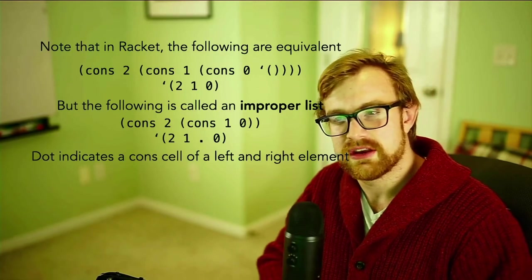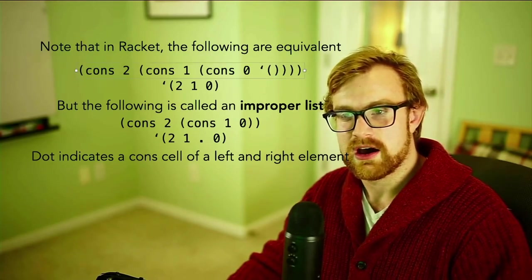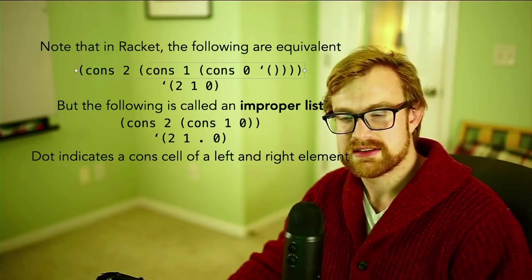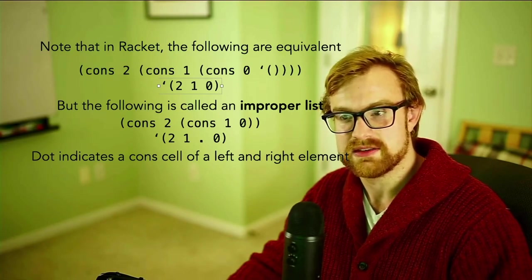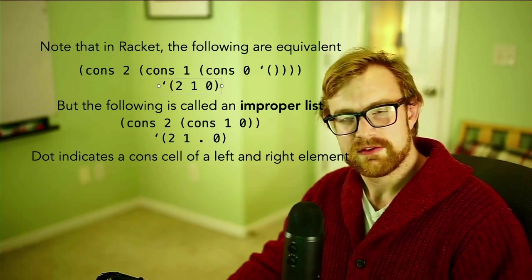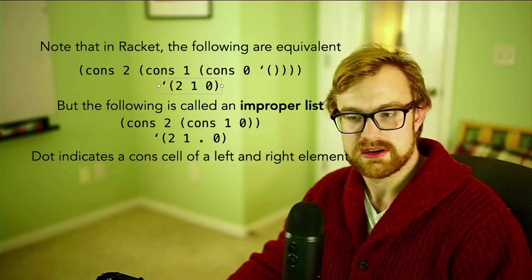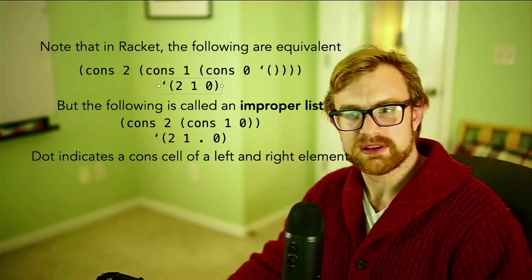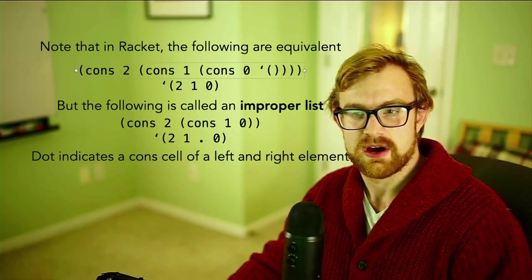And this is how Racket actually represents lists in memory. So each of these different cons cells is laid out at a physical memory location. The empty list itself is laid out at a physical memory location. Now also note that in Racket, the following two things are equivalent. So if I write cons two cons one cons zero list, that's the same as just writing out this literal list two one zero using the quote syntax.